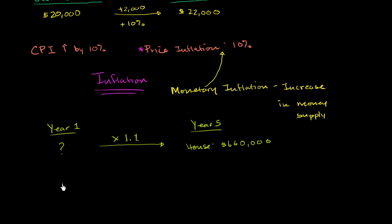So what amount of money would that house had to have cost in year one, that if I multiply it by 1.1, I get $660,000? And we could do a little quick math here to figure that out. So if we say, let's call it P, P is the price of the house in year one. I'll call it P1. That times 1.1 is going to be equal to $660,000, when you factor in the 10% inflation over these years.